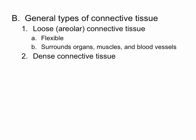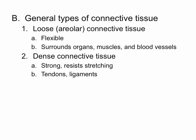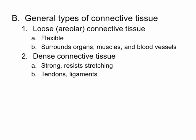The next type is dense connective tissue, which is very strong. It's significant in that it resists stretching along its axis. Tendons and ligaments are good examples of dense connective tissue — they're really strong and resist pulling and stretching forces. In the image, the dense connective tissue shows how closely the collagen fibers are packed together compared to the loose areolar connective tissue.